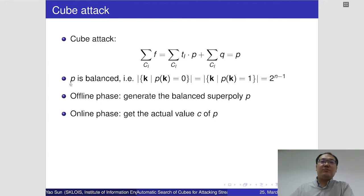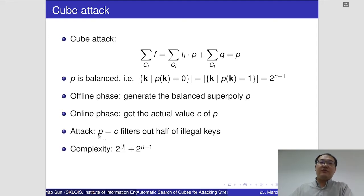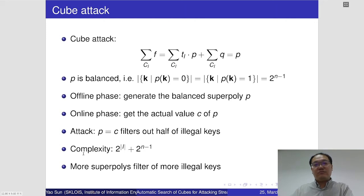This polynomial p is called the superpoly of the cube. Generally, the superpoly p should be balanced. In the offline phase of the cube attack, we need to generate the balanced superpoly p. In the online phase, we query the oracle many times to get the actual value of p, and we obtain an equation. Using this equation, we can filter out half of the illegal cases. Using more superpolys can lower down this complexity — this is the main idea of the cube attack.